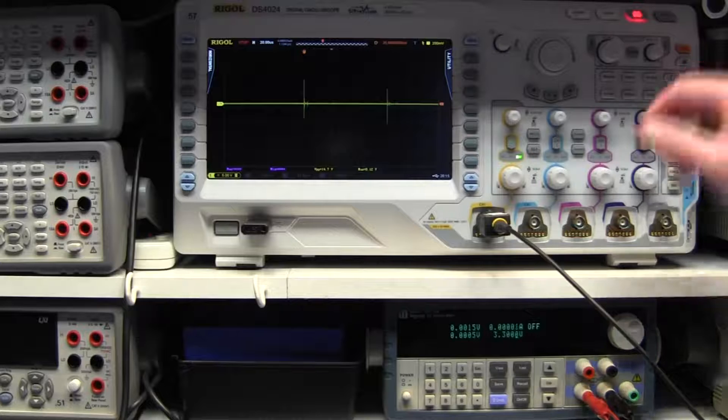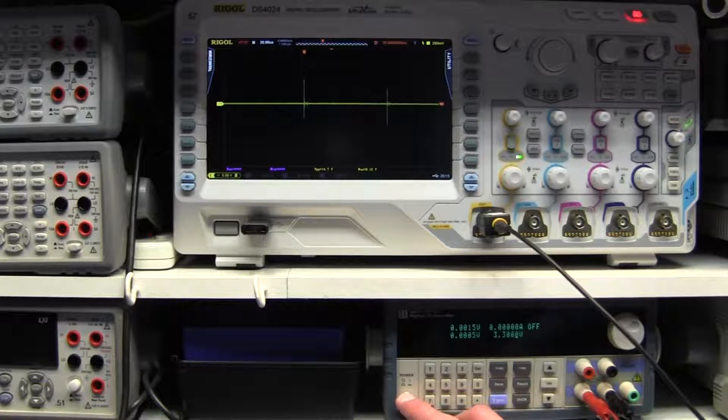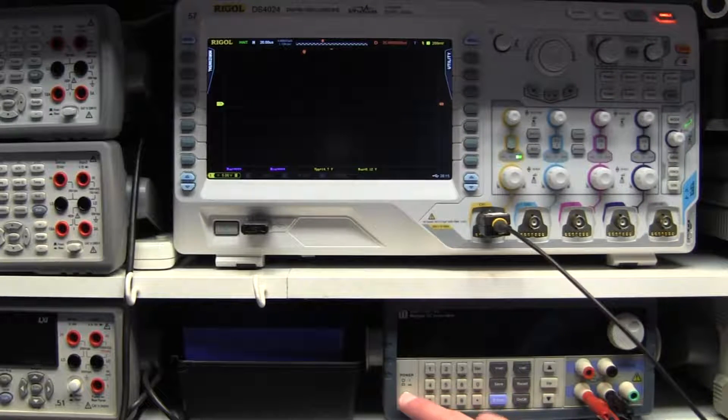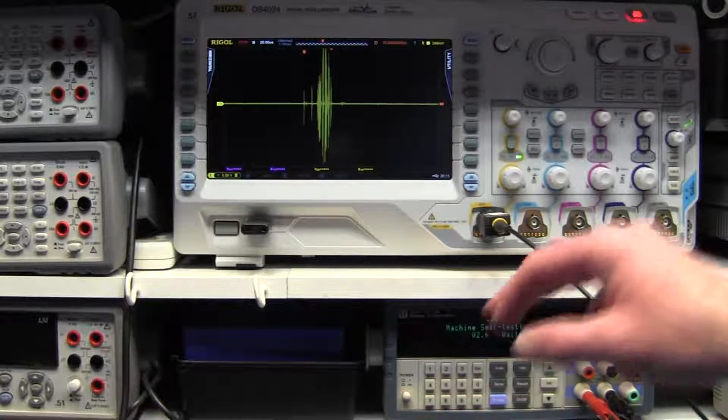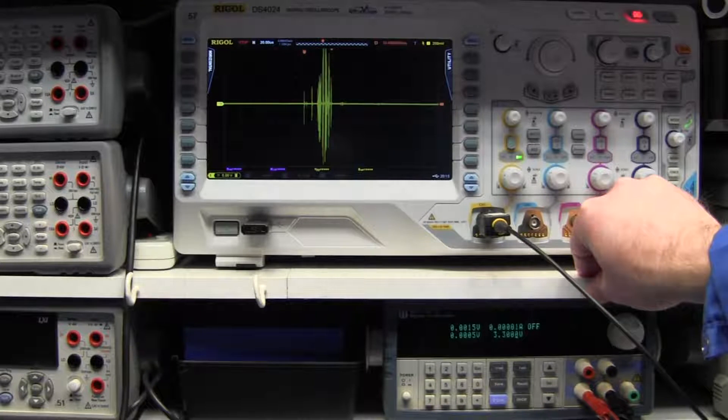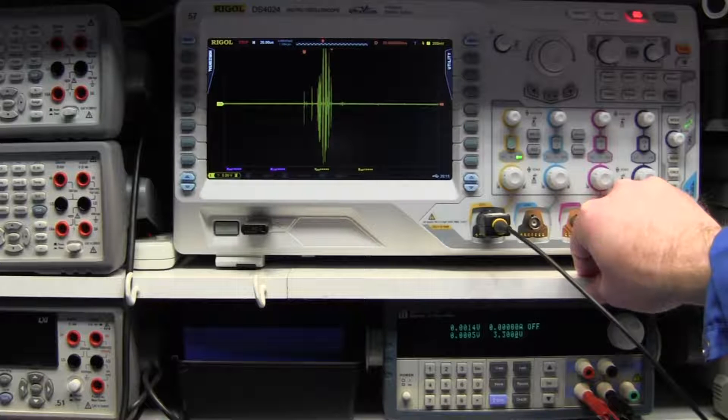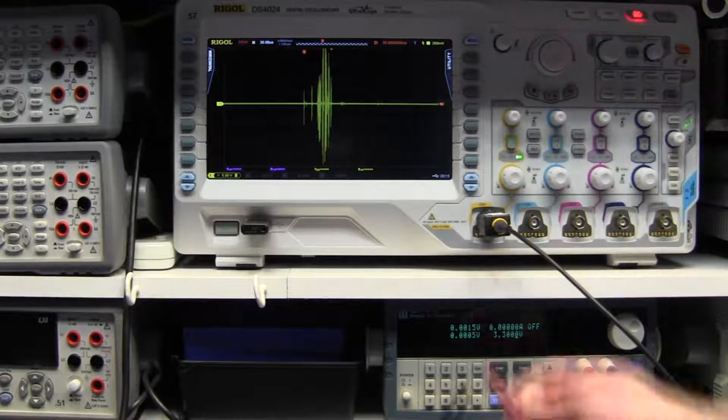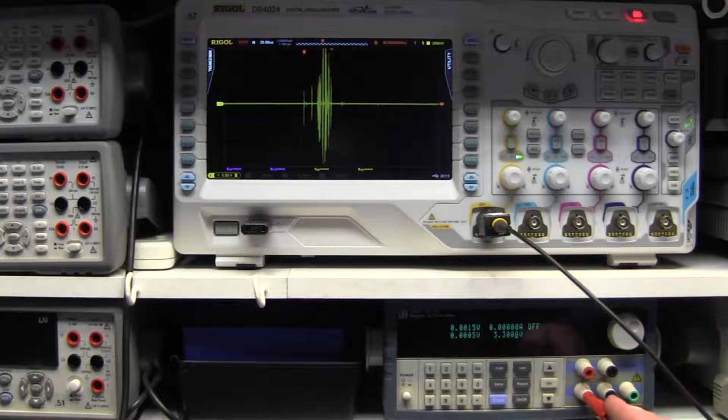Alright, we have a 1K resistor hooked up as a simple load. And let's see what the spikes look like. Whoa! We have exceeded the threshold, so we're looking at beyond 40 volts peak to peak. And that's with a 1K resistor connected across the outputs.